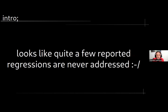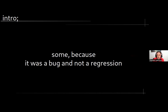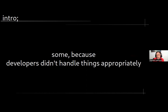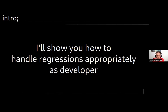It might look like many reported regressions are never addressed. Reasons include: the report was bad, it was actually a bug and not a regression, or nobody located the change causing it. Sometimes developers don't handle things appropriately — which they don't want, because Linus might send them angry mails. This talk is here to help users get regressions fixed, and show developers how to handle them.